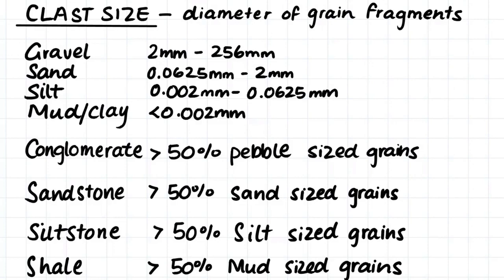We divide our grains up into four groups. If we find a grain that is 2mm up to 256mm, we would classify this as gravel. Grains between 0.0625mm and 2mm in diameter are sand. Silt is 0.002mm up to 0.0625mm. And finally, our clay or mud grain is less than 0.002mm in diameter.